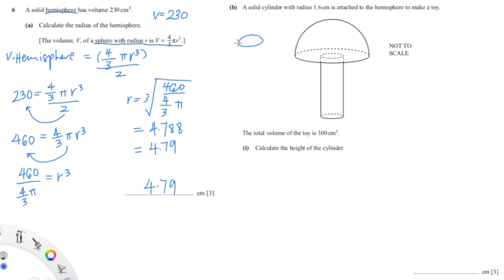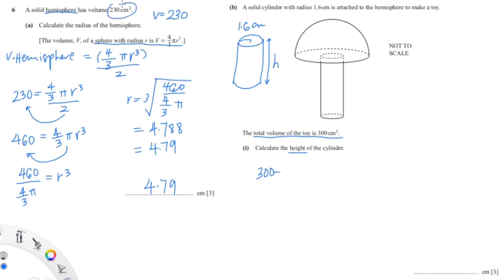For the next part, I'm going to separate the cylinder by drawing it so that we know the radius of the cylinder is 1.6, as given in the question. Since we're finding the height, we'll name that length h. Because the total volume is 300 and the volume of the hemisphere is 230, we subtract to get 70 cm³ for the cylinder.